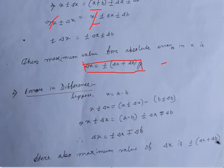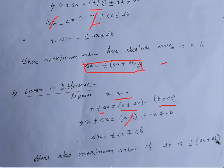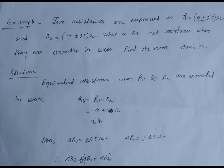Suppose x equals a minus b. Then x plus-minus del x equals (a plus-minus del a) minus (b plus-minus del b). We can cancel out x and (a minus b) like the previous case. The value of del x comes out as del x equals plus-minus del a minus-plus del b. Here also the maximum value of del x equals plus-minus (del a plus del b).